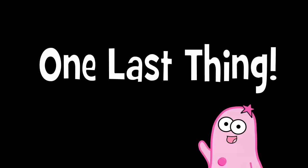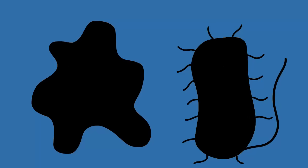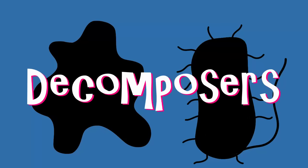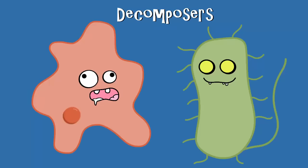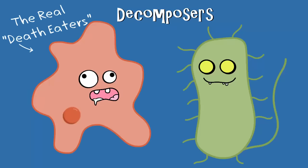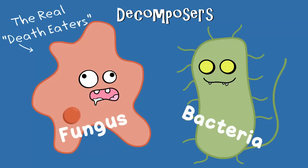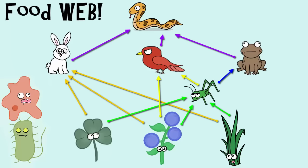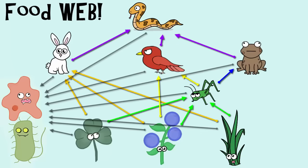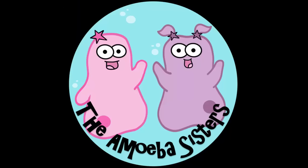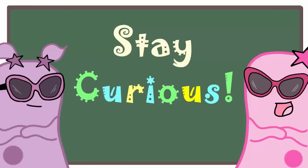One last thing. There are some organisms that we left out of our food webs and food chains, but they're kind of a big deal: decomposers. Decomposers are heterotrophs since they do eat other things, even if the things they're eating aren't alive. Decomposers include organisms like bacteria and fungus. Technically, if we were to draw them in, then every arrow here would eventually point to them. That's it for the Amoeba Sisters, and we remind you to stay curious.